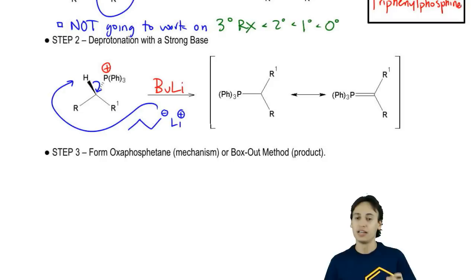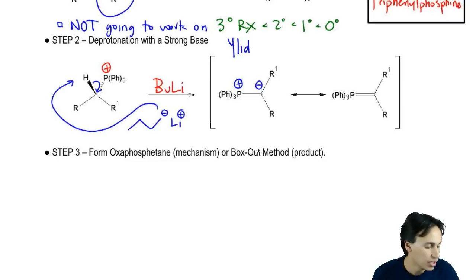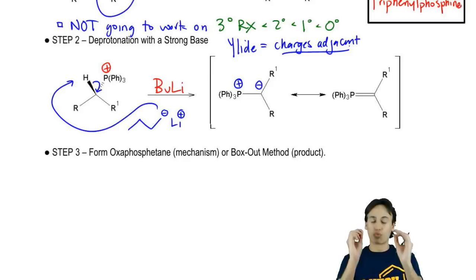It's going to deposit a lone pair onto the carbon. What this is going to do is it's going to give me two charges that are next to each other on the same compound. I'm going to get a positive charge on my P, a negative charge on my carbon. This is what we call an ilid. Just so you know, an ilid means that you have charges adjacent to each other. Got that so far? Charges adjacent to each other is an ilid. I've got my positive and my negative right next to each other.